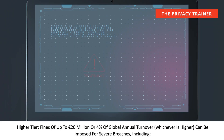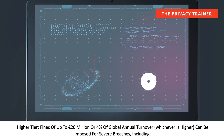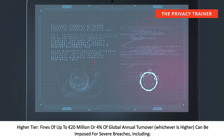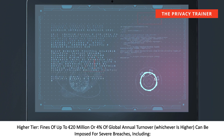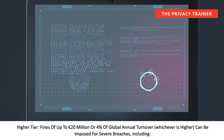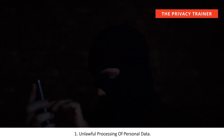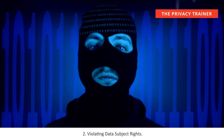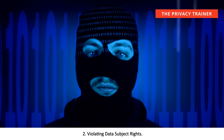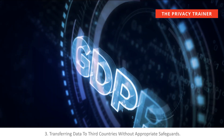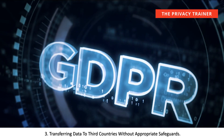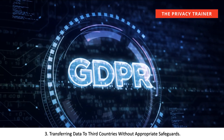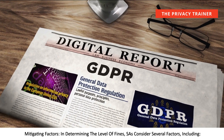Higher-tier fines of up to 20 million euros or 4% of global annual turnover, whichever is higher, can be imposed for severe breaches, including: 1. Unlawful processing of personal data. 2. Violating data subject rights. 3. Transferring data to third countries without appropriate safeguards.